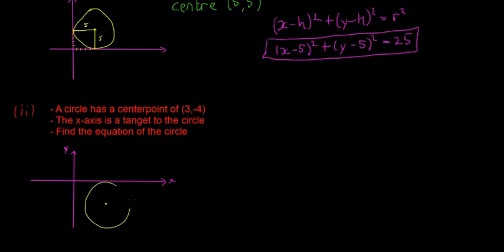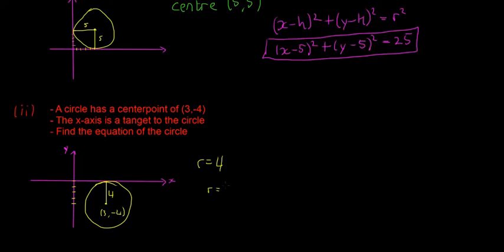We draw the tangent bit first. This isn't perfectly accurate, but all we really need is a rough idea of the tangent point and the center point. We know this point is (3, -4). If this is minus 4 down on the y-axis, that means it goes minus 4, minus 3, minus 2, minus 1, and then 0. So the distance between the center point and the x-axis is going to be 4. A distance can't be minus, so the distance itself is 4, and that means that's also the radius — r is equal to 4.